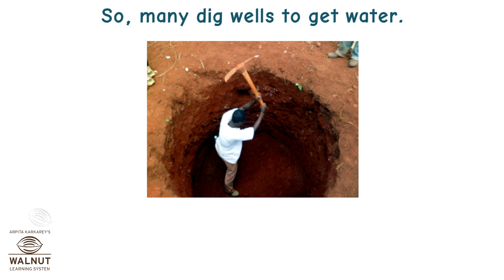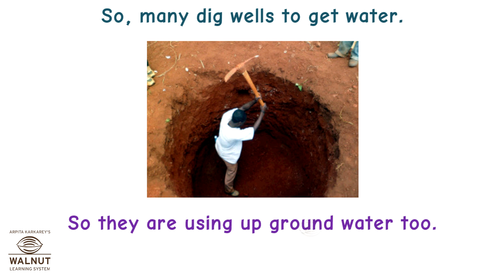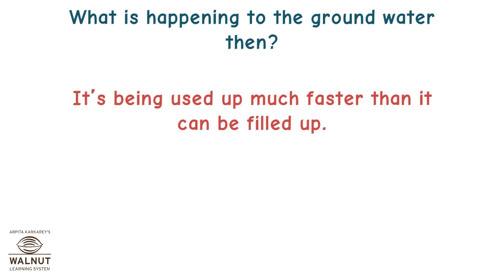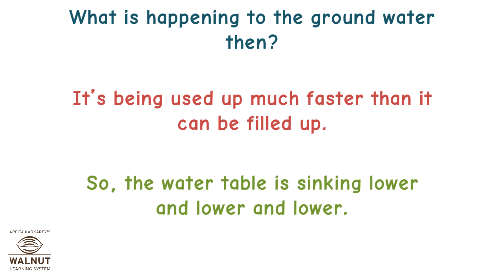So many farmers dig wells to get water, meaning they are using up groundwater too. What is happening to the groundwater then? It is being used up much faster than it can be filled up. So the water table is sinking lower, lower and lower.